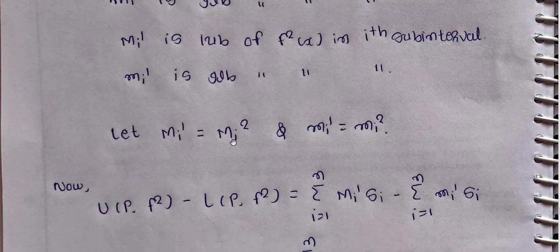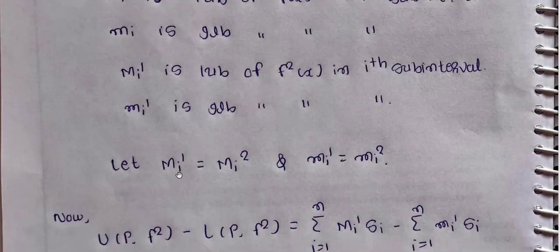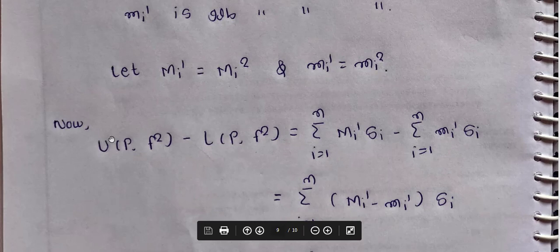Now, capital Mi' is equal to capital Mi squared, because the LUB of f of x in the i-th subinterval squared gives the LUB of f squared of x in the i-th subinterval. Similarly, small mi' is equal to small mi squared.